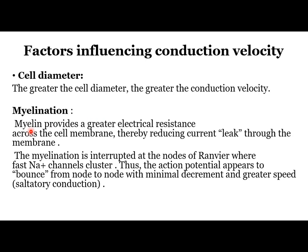Myelin provides greater electrical resistance across the cell membrane, reducing current leakage through the membrane. Myelination is interrupted at the nodes of Ranvier where sodium channels are clustered, so the action potential jumps from one node to another with minimal decrease in magnitude and at greater speed.